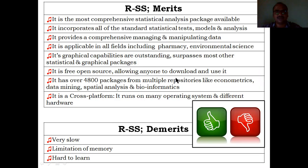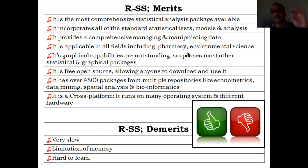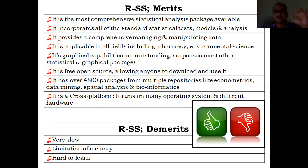R is a free open source, allowing anyone to download and use it. It has over 4800 packages from multiple repositories covering econometrics, data mining, bioinformatics, and more. It is useful in all fields — pharmacy, environmental science, NASA, ISRO, research, and even farmers — because statistics is compulsory in all fields.